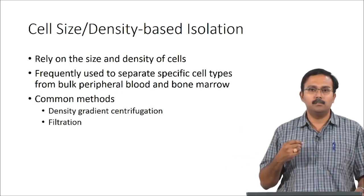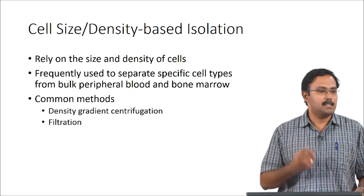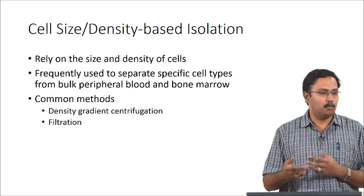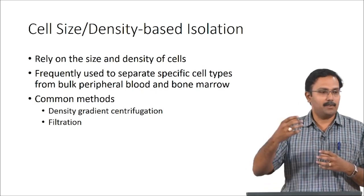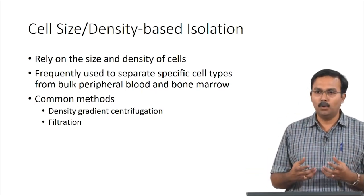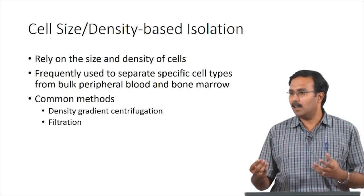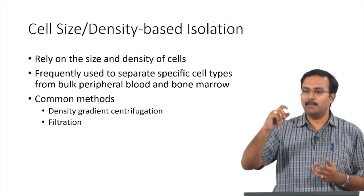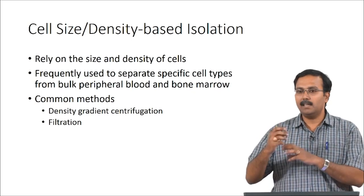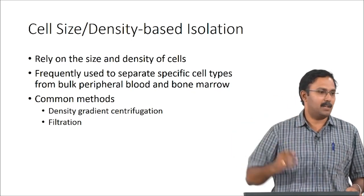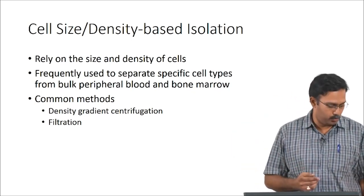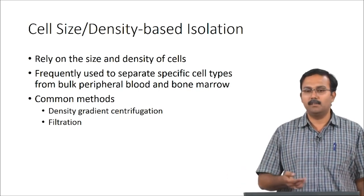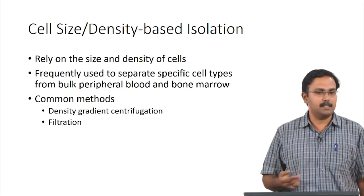This is frequently used to separate specific cell types from peripheral blood or bone marrow. When you have this kind of liquid source, you spin it down and you end up with pellets at the bottom, or different layers from which you can get different cell sources. This is very commonly done even in clinical settings.